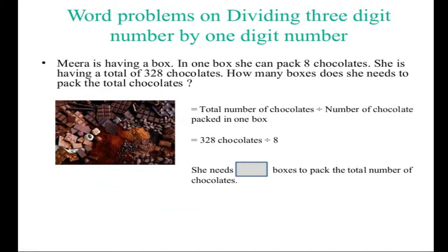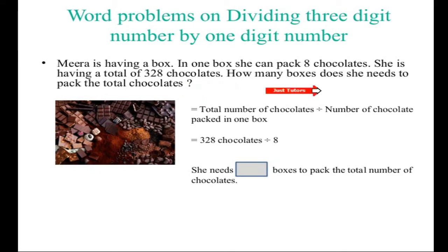Now let's practice a worded problem based on division of a three-digit number by a one-digit number. Mira has a box — in one box she can pack eight chocolates. She has a total of 328 chocolates. How many boxes does she need to pack all the chocolates? We need to divide 328 by eight using the bus stop method.